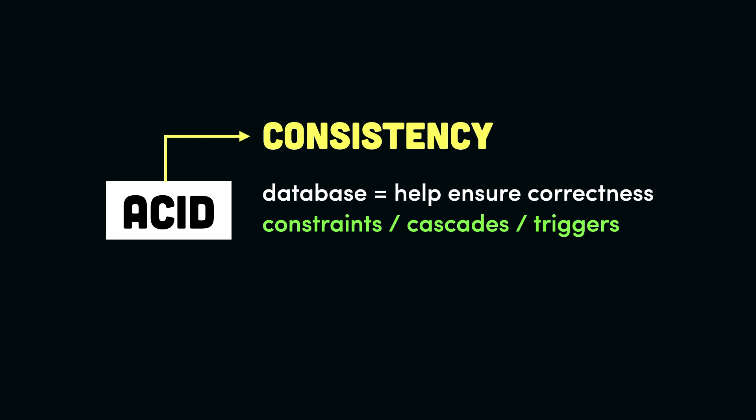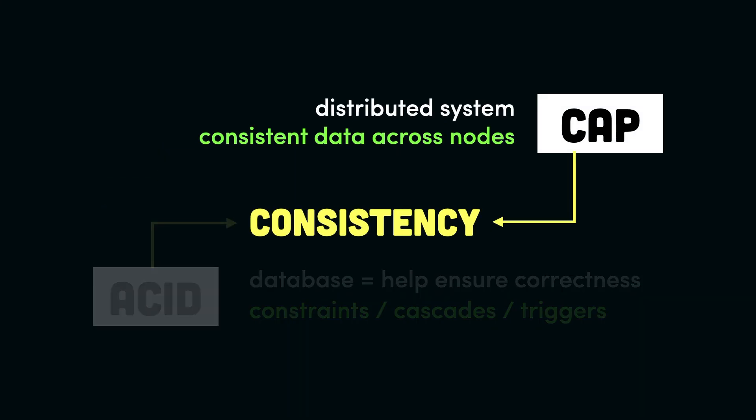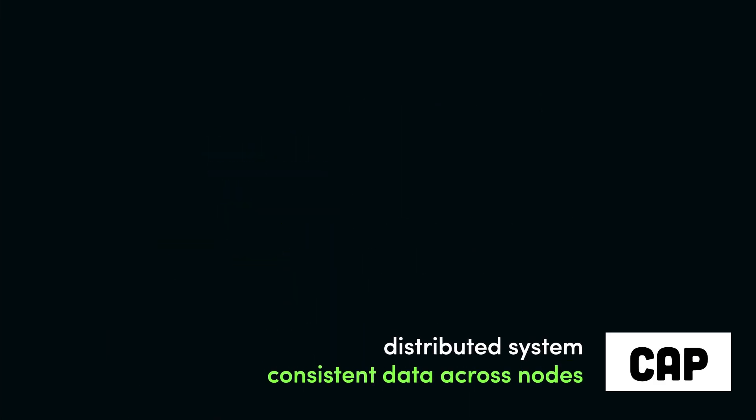We also talked about consistency when discussing the CAP theorem, which is mainly about distributed systems. In that context, consistency means that the data should be consistent across all nodes of a distributed system. Let's break it down and see what we mean by consistency and eventual consistency in terms of a distributed system.